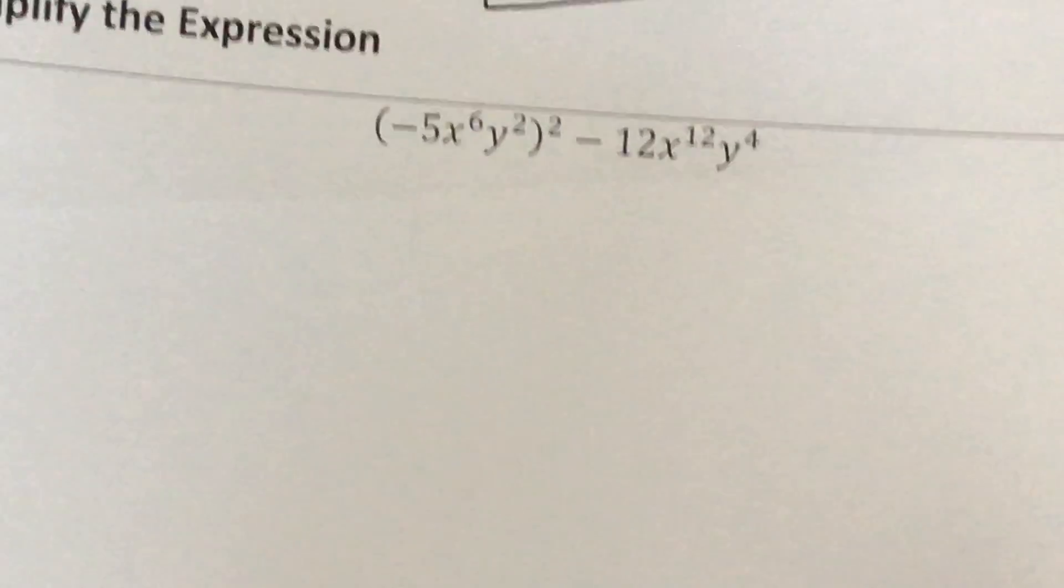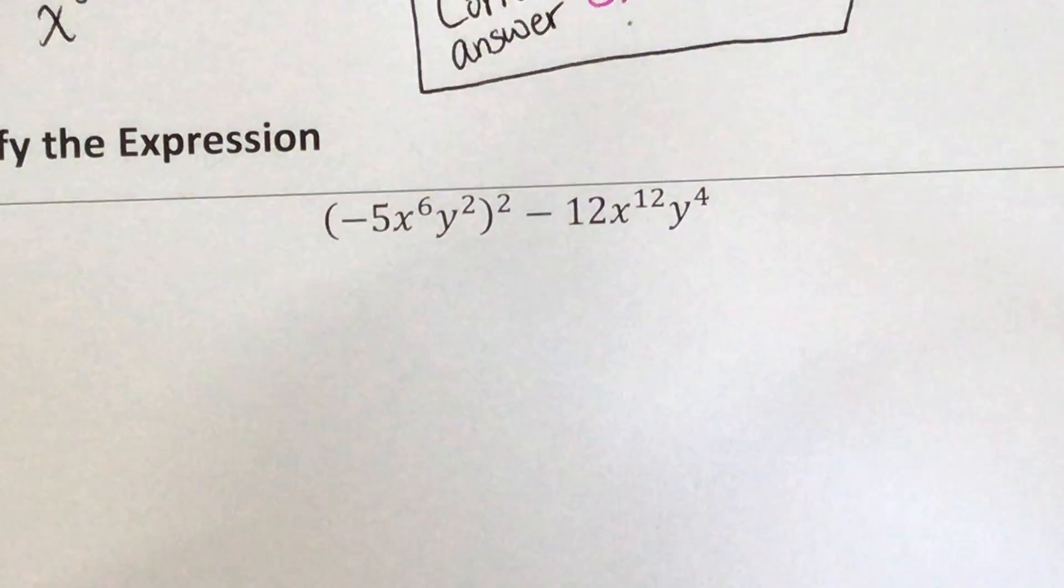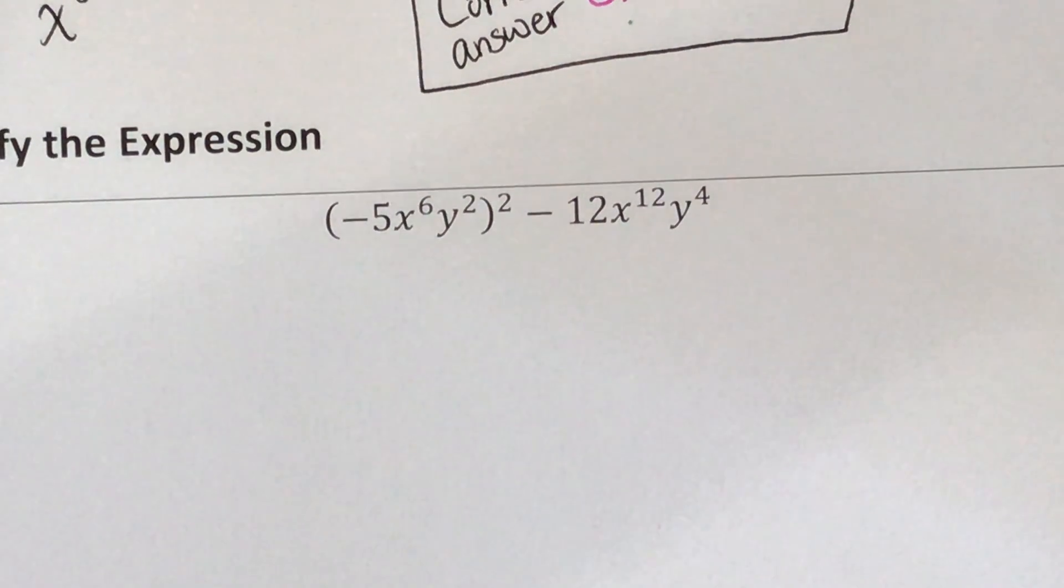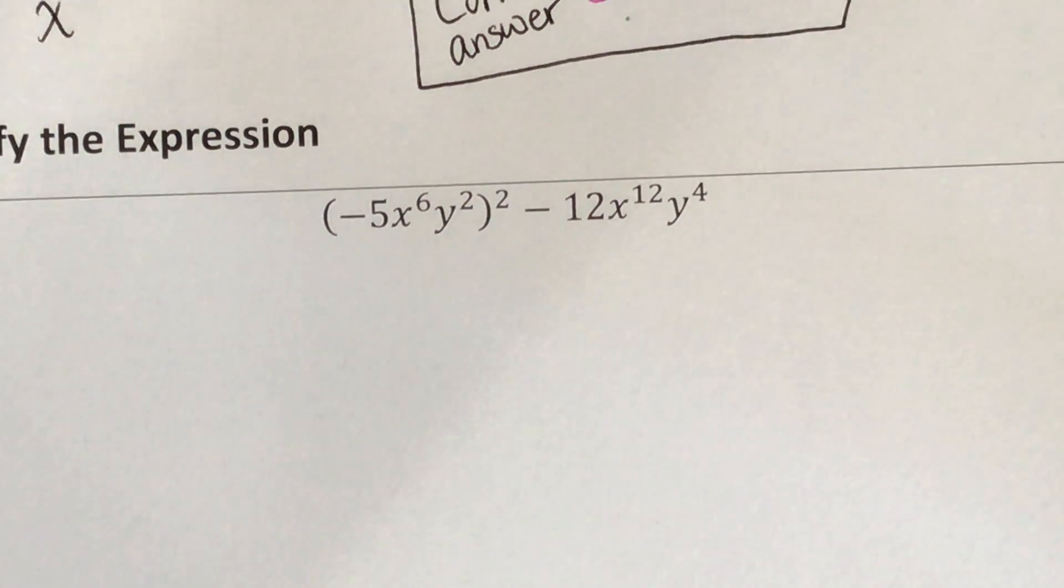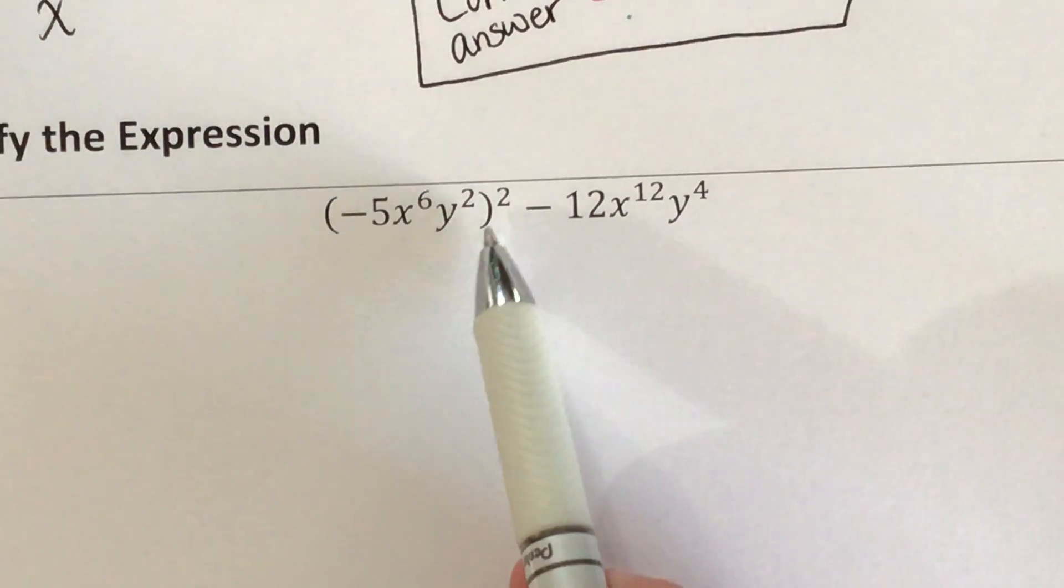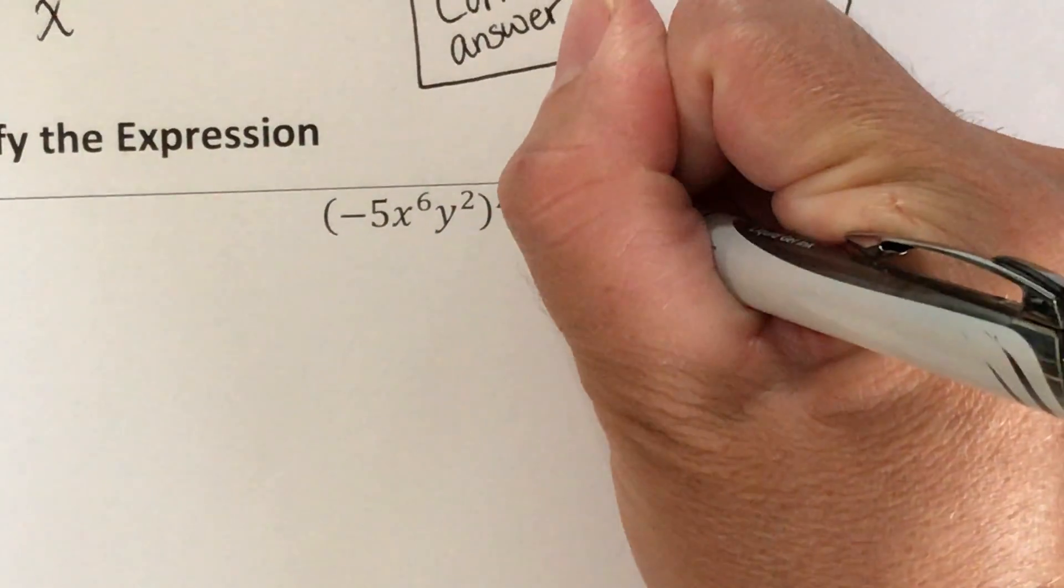So in this example, we're actually going to go back and recall some of our properties of exponents rules. So before, this is going to be a two-step process. Before I can start combining like terms, well right now, I don't have any like terms. But also, it's not simplified because notice how I have parentheses here. It's not simplified if you have parentheses.